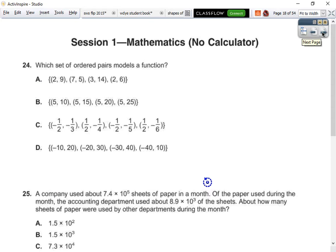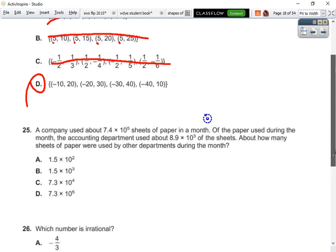Which set of ordered pairs defines a function? Well, clearly not this one because we have 5 multiple times in the x value. Clearly not this one because we have negative 1 half multiple times. This one has two repeated, so it can't be this one. So I was looking for repeats in the x value.